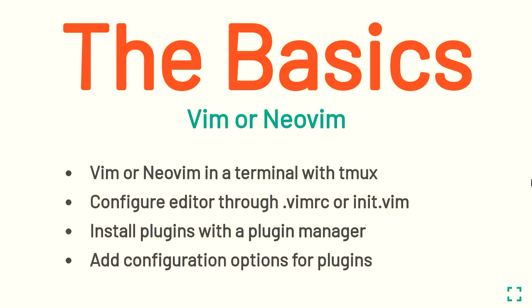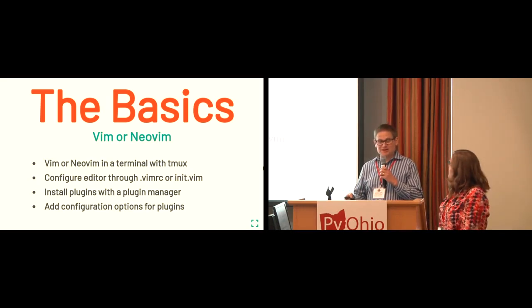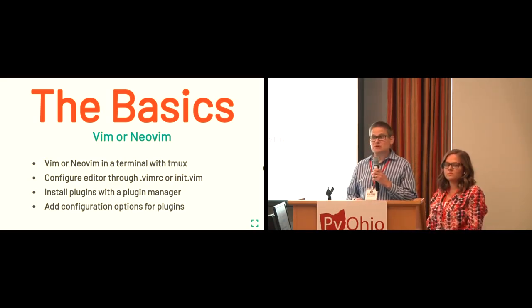Now I'd like to spend some time talking about the basics of configuring Vim or NeoVim — you can think of both as providing very similar features. In this demonstration, you'll notice that we run Vim or NeoVim inside of something called TMux, a terminal multiplexer that makes it easy to divide your terminal window into separate windows and panes. We configure the editor through a configuration file like a VimRC file in Vim or an init.Vim file in NeoVim, and we'll show you how to use a plugin manager called Plug, which allows you to install a wide variety of plugins.